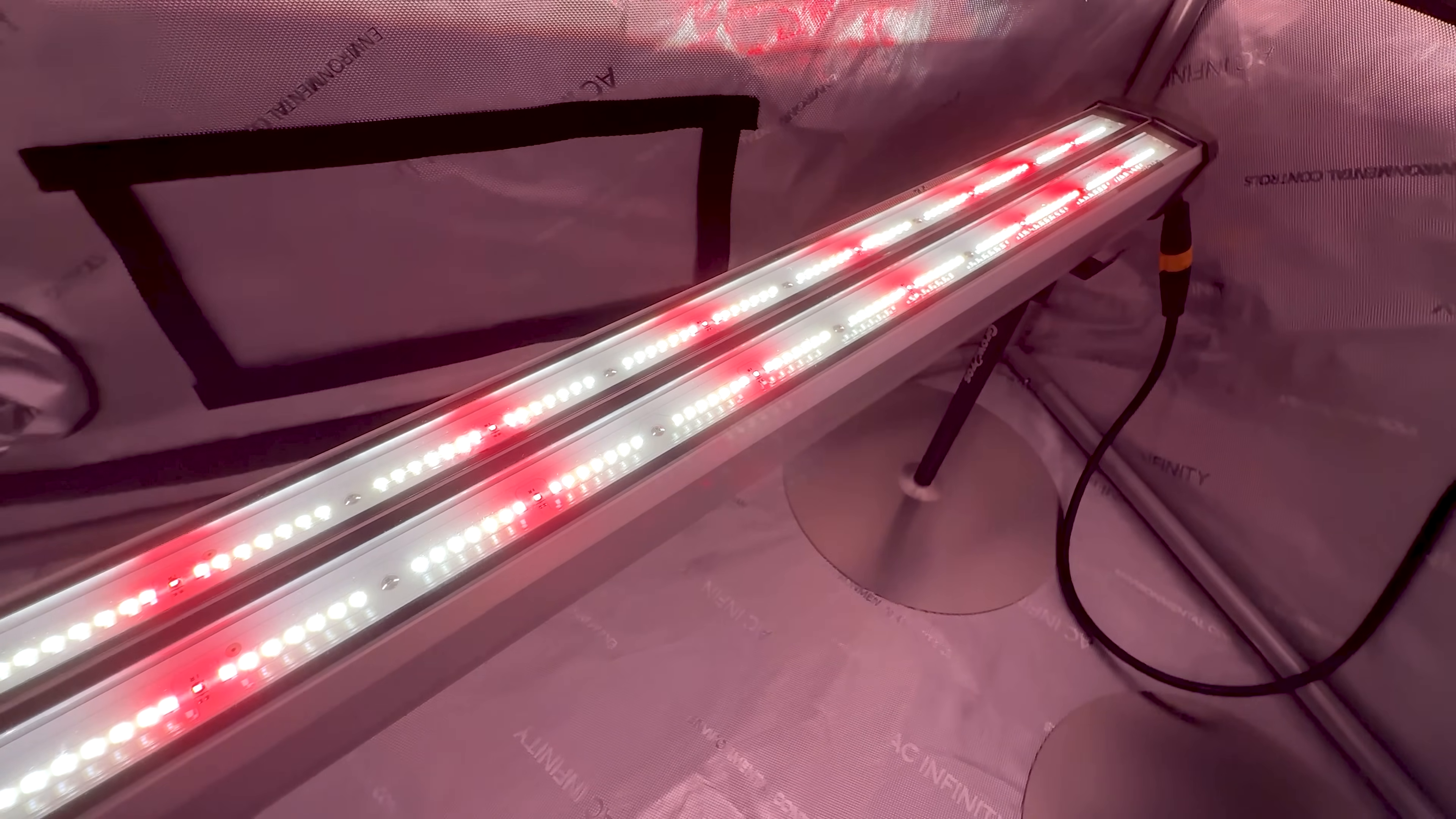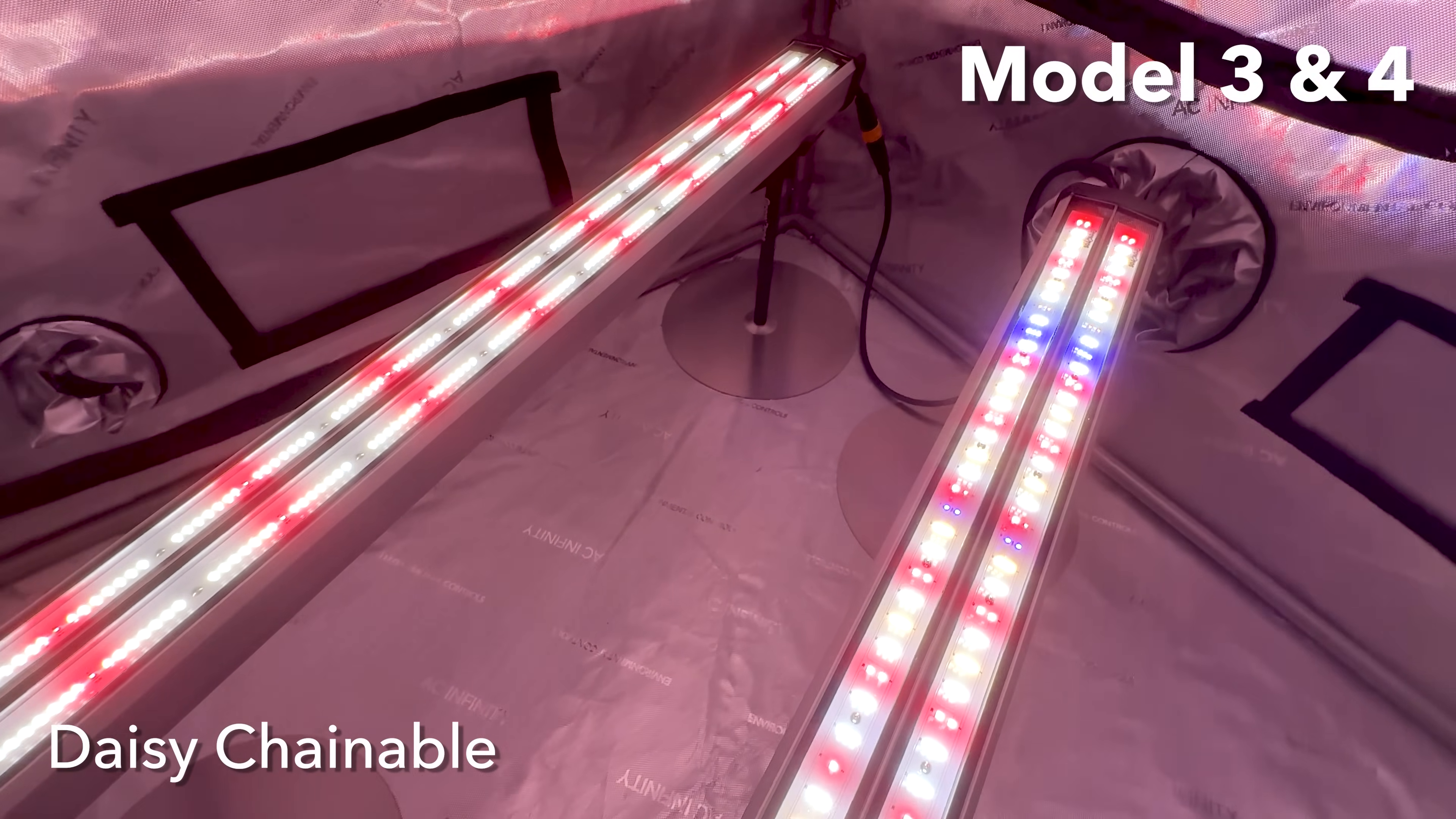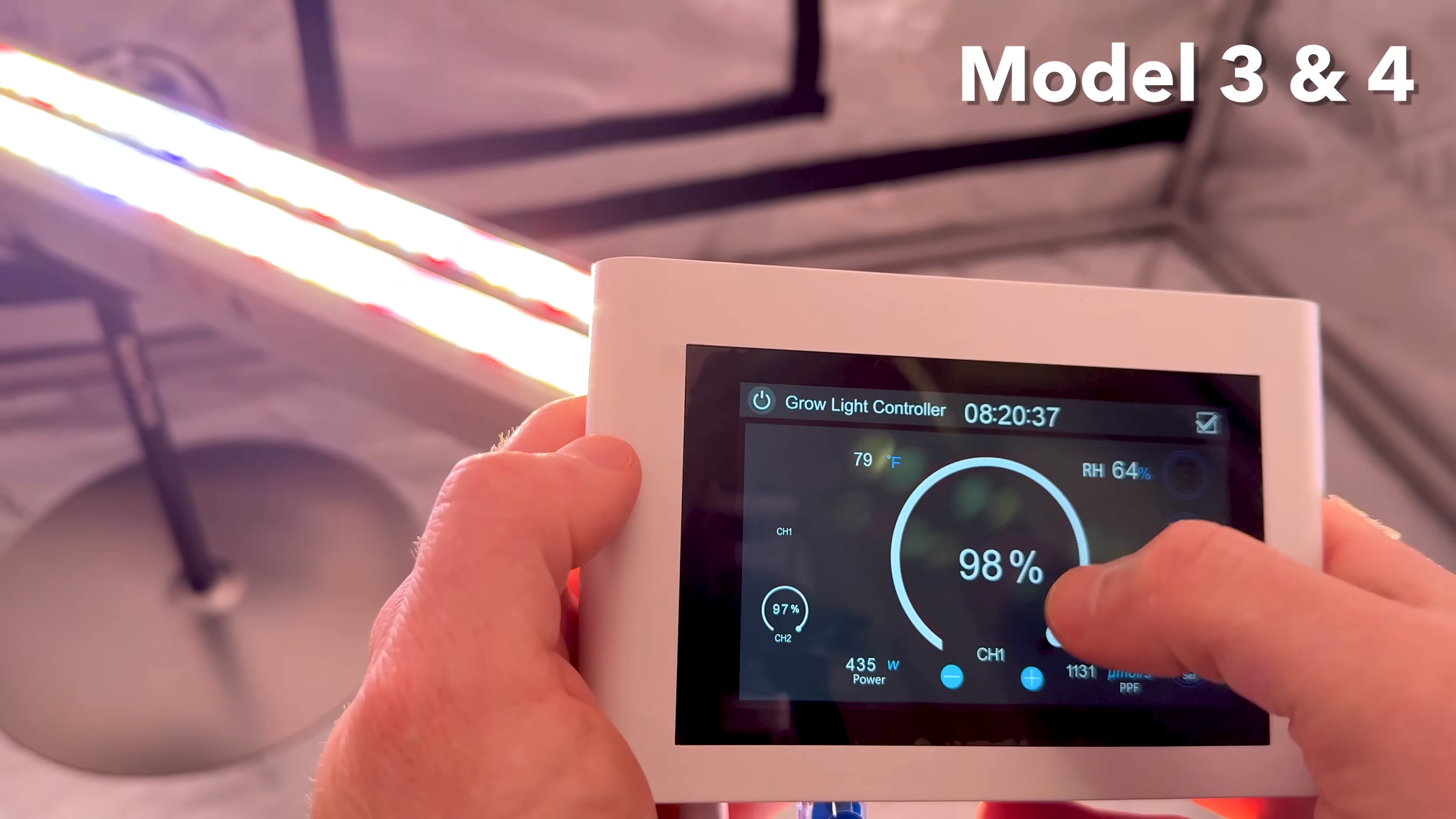Let's break down the features and benefits of the two available models. Both models are lightweight, compact, and feature daisy chaining for seamless setup. They are dimmable and compatible with most RJ12 based controllers, including Trollmaster and GrowPros environment controller.